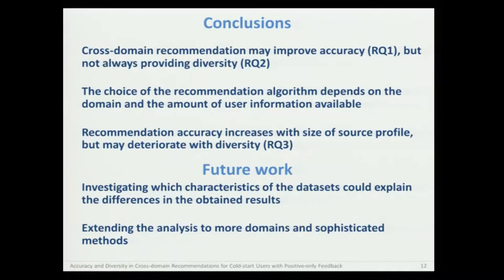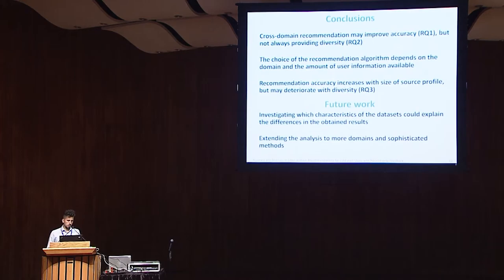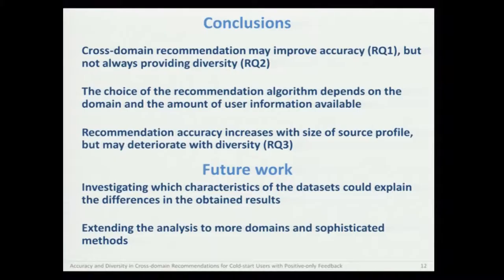As a conclusion, cross-domain recommendation is useful to improve accuracy, but not always diversity. The choice of method depends on the domain and the amount of information available. Accuracy increases with the size of the source profile, but conversely it can deteriorate with diversity. As for future work, we are planning to investigate which characteristics in the dataset can explain the differences seen in the results, and also to extend the analysis to more domains and more sophisticated methods, such as specific cross-domain methods.